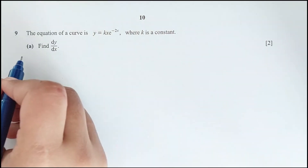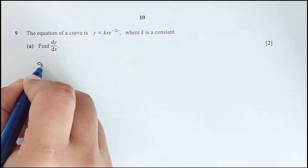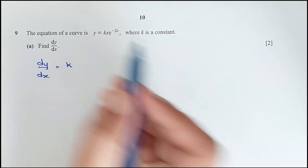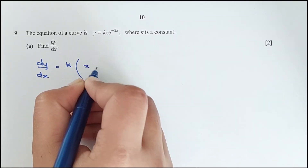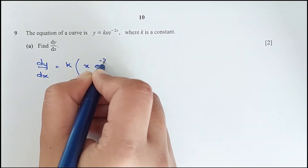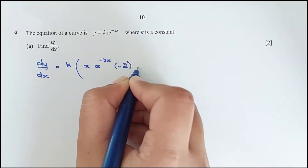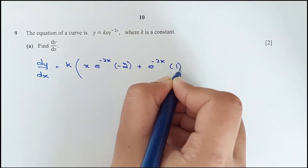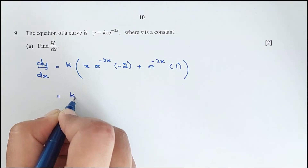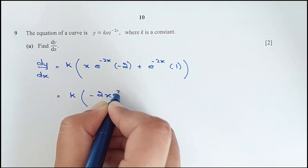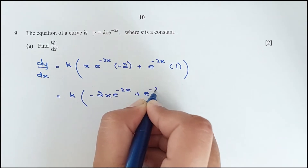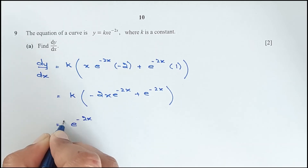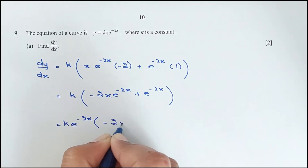Question 9 part a: find dy/dx, where k is a constant. Using the product rule: dy/dx equals k times [x times e^(minus 2x) times (minus 2) plus e^(minus 2x) times 1], which simplifies to k times e^(minus 2x) times (1 minus 2x).